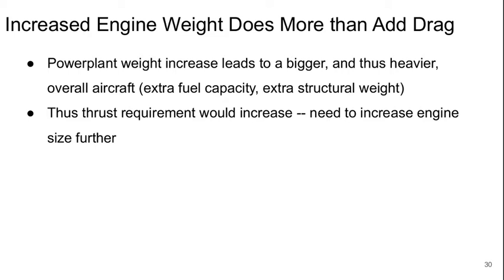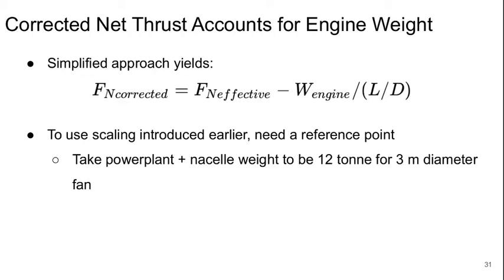This is how we would realistically do this — we would consider these effects if we were doing a real engine design, but that's getting a little too complicated for what we want to do here. So we'll instead just look using the model we've developed for our corrected net thrust that accounts for engine weight. We have a simplified approach where the corrected net thrust equals the effective net thrust from before minus the engine weight divided by the aircraft L over D. We use a scaling point that the power plant plus nacelle would be about 12 tons for a 3-meter diameter fan.